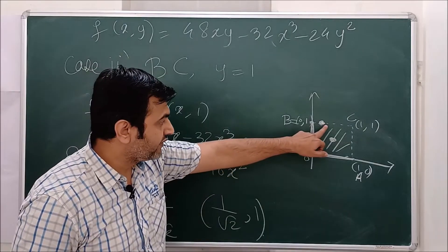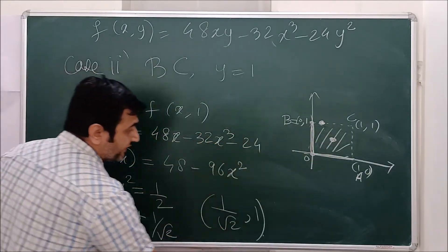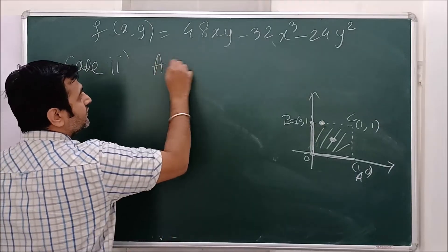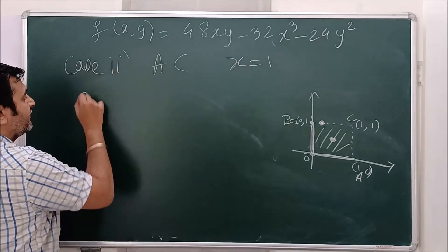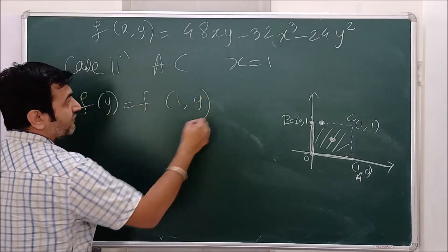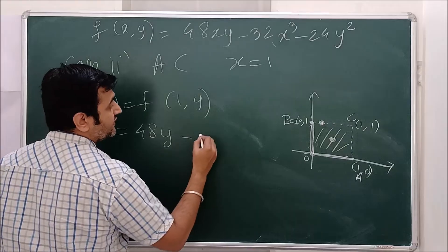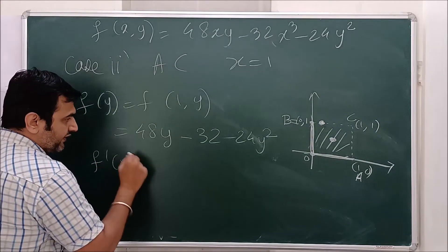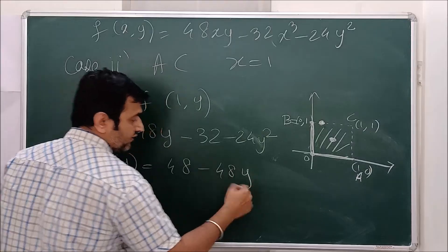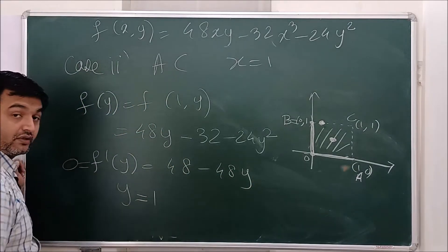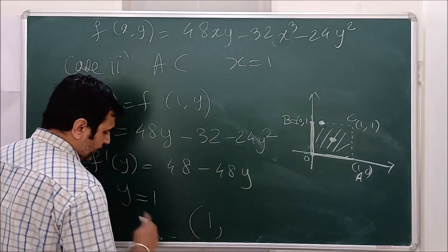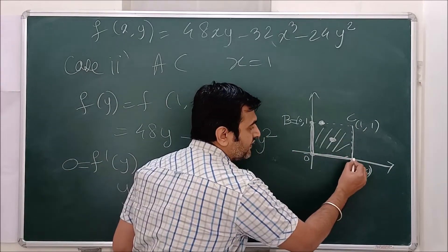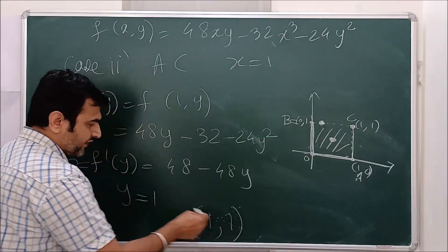On segment AC (x = 1 fixed): f becomes f(1, y) = 48y − 32 − 24y². The derivative is 48 − 48y = 0, giving y = 1. But (1, 1) is a boundary point (corner) of this segment, so no interior critical points are found on AC.